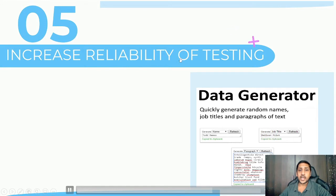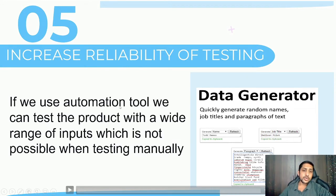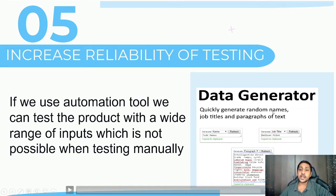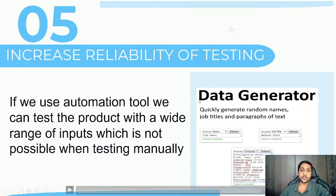The fifth purpose is increasing reliability of testing. Using automation tools, you can test the product with a wide range of inputs which is not possible manually. For stress testing, you need to provide a lot of data to create a stress environment, which is very difficult to achieve manually. A data generator tool can quickly generate random names, job titles, and text in different combinations to increase the reliability of testing.